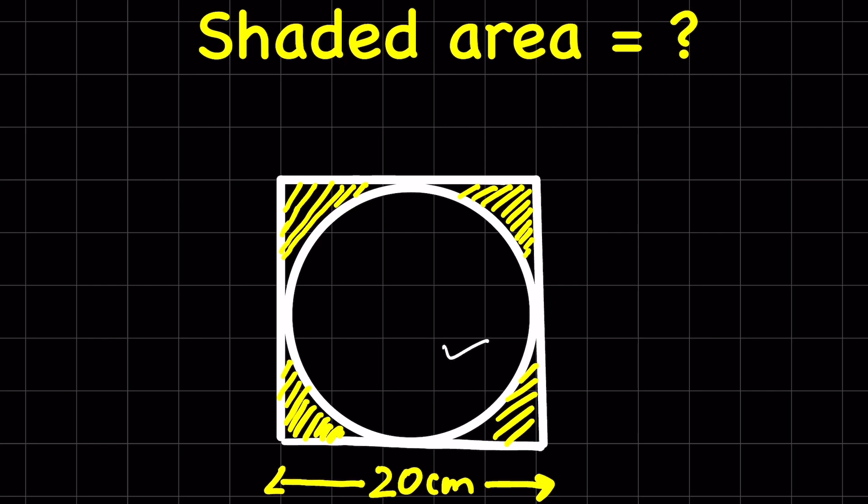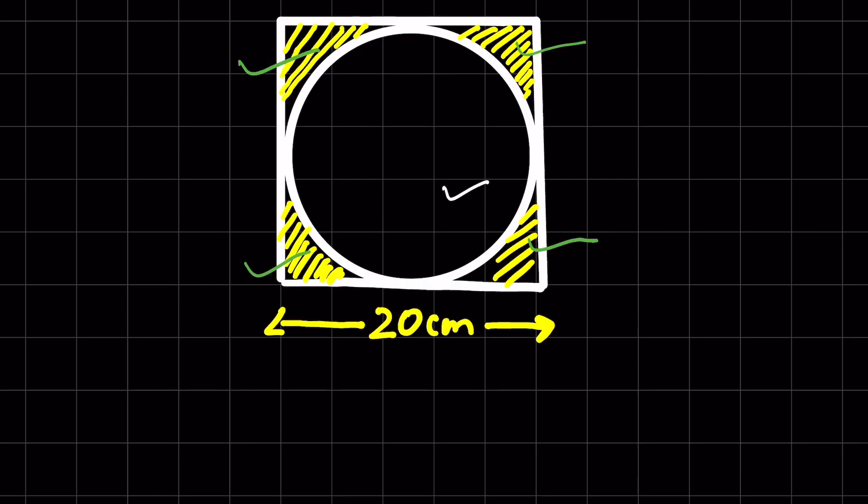Here we have a circle inscribed inside a square. We have to find the area of the shaded region. This area can be calculated if we first find the area of the square.